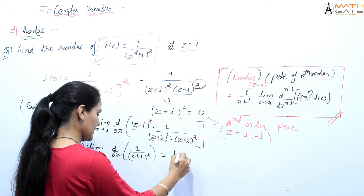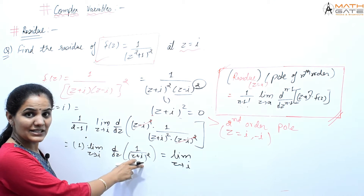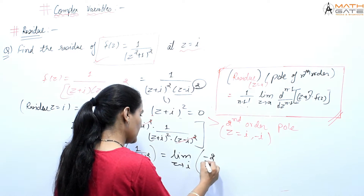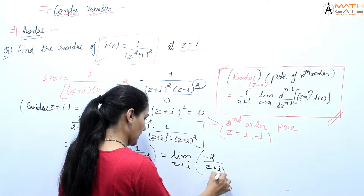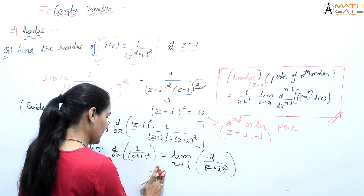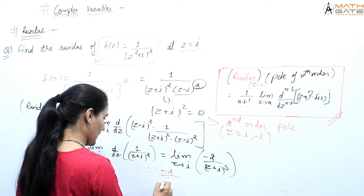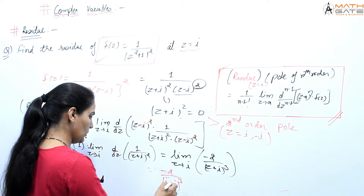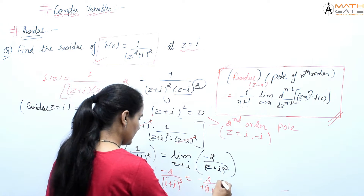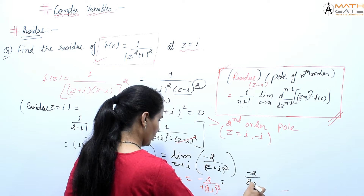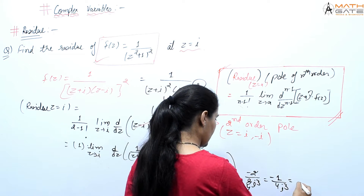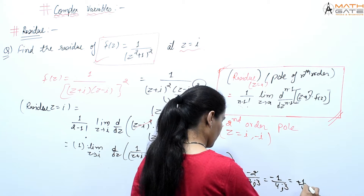Differentiating 1/(z+i)²: d/dz [1/(z+i)²] = −2/(z+i)³. Now applying limit z→i: −2/(i+i)³ = −2/(2i)³. We have (2i)³ = 8i³ = 8×(−i) = −8i. So this becomes −2/(−8i) = 1/(4i). Also, iota³ = −i, so −2/(2i)³ = −2/(−8i) = 1/(4i).